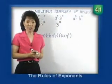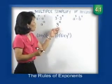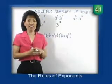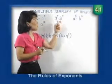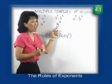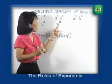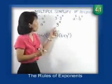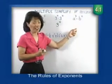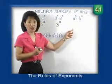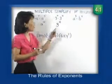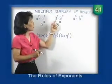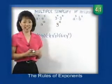Let me caution you on this particular problem. Many students, when they see the base as a number, feel tempted to multiply the bases together and write this as 9. But if we wrote 9 to the eleventh power, we'd be incorrect, because we don't have 11 nines — we have 11 threes. So be very cautious. Most students can do this problem okay, but when they see numbers they're tempted to multiply. Don't make that mistake.